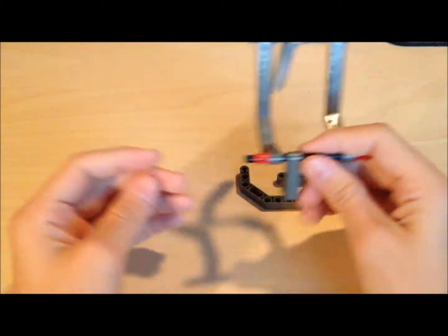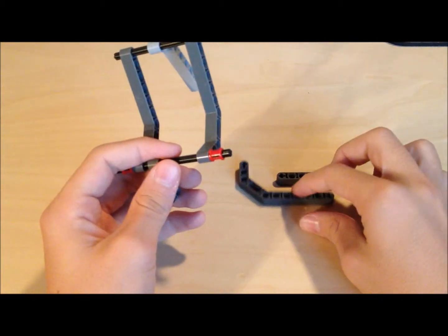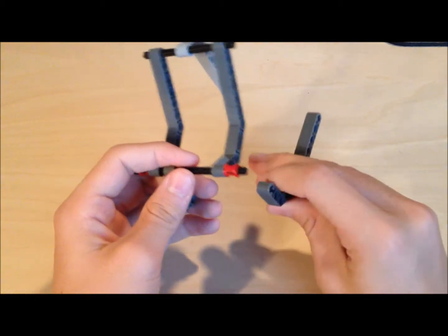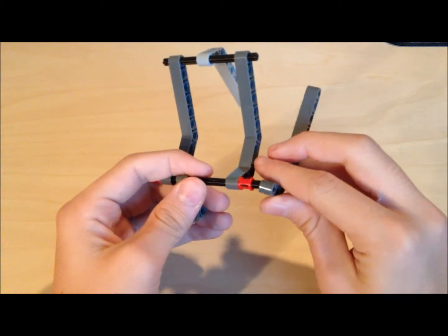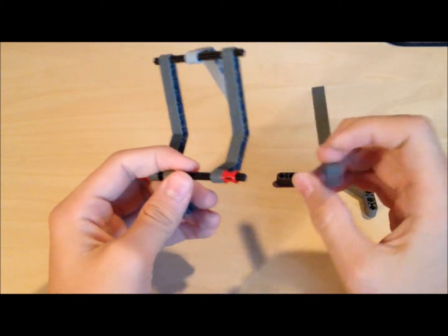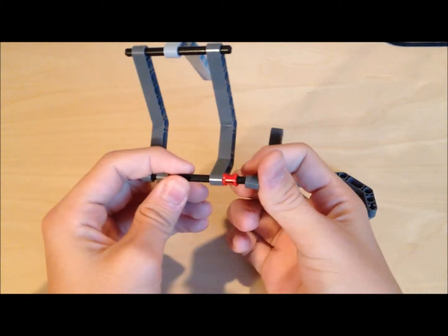Alright, so this is what you should have so far. Then you want to take these last two angle pieces and put them on like so.